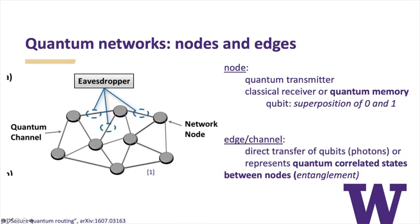These nodes in a network are connected by channels. These channels can represent a direct transfer of qubits — single photons flying through and perhaps detected by a classical receiver. Other times, these edges can represent entanglement or quantum correlated states between nodes: a non-classical correlation between the quantum bit in one node and the quantum bit in another — these nodes are entangled. This is the main motivation for the networks I'm going to discuss today.